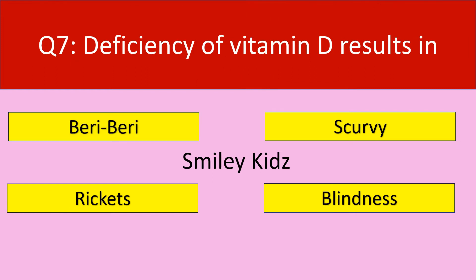Question number 7. Deficiency of vitamin D results in which condition? Options are: beriberi, scurvy, rickets, blindness.